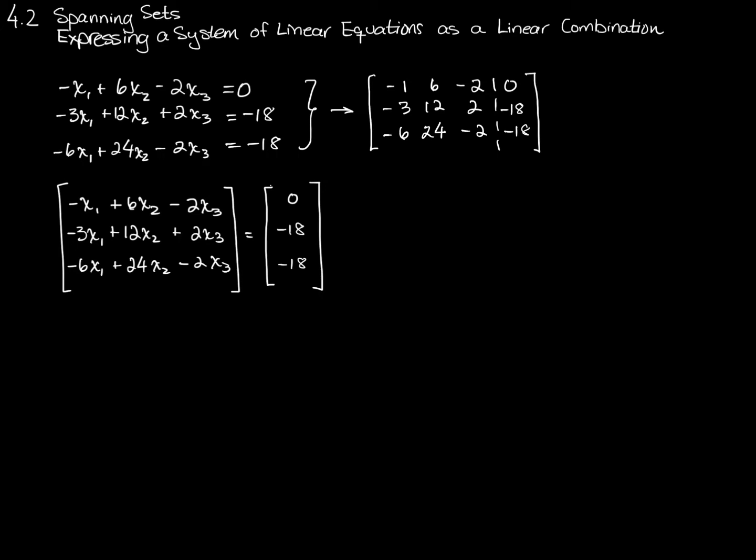Matrix addition lets me write the left-hand side of this matrix equation this way. Negative x1, negative 3x1, negative 6x1 in one column matrix, plus 6x2, 12x2, and 24x2 in a separate column matrix. And then I'm going to have in my third column matrix here, negative 2x3, positive 2x3, and negative 2x3.